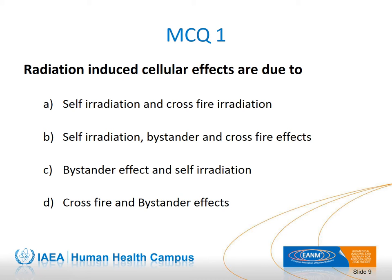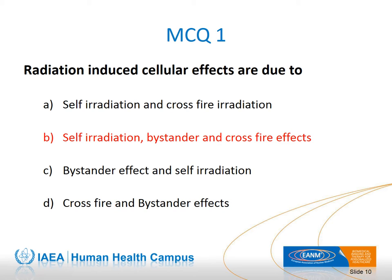The first multiple choice question related to this topic: radiation-induced cellular effects are due to which of the following? The right answer is B: it is due to self-irradiation, bystander, and cross-fire effects. The explanation will be given shortly.